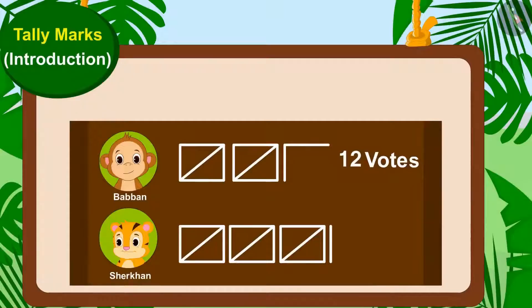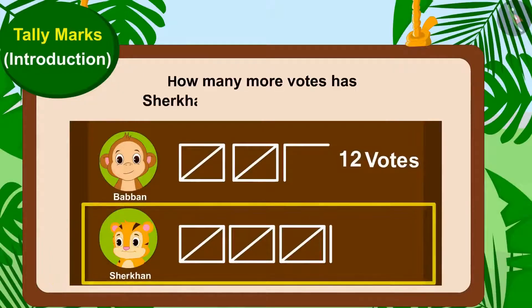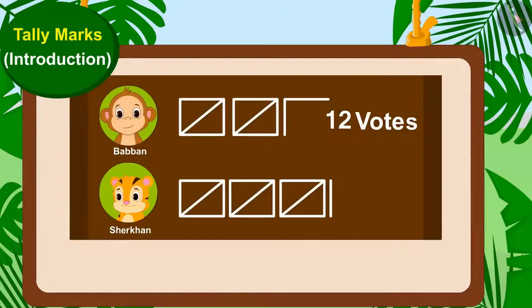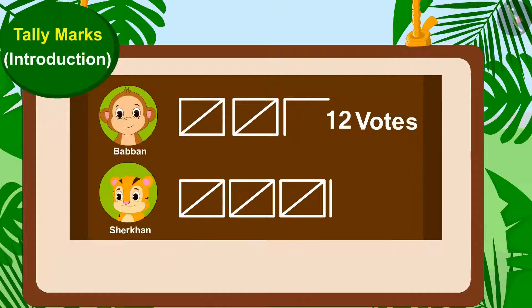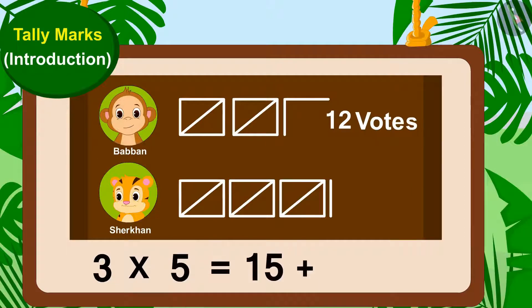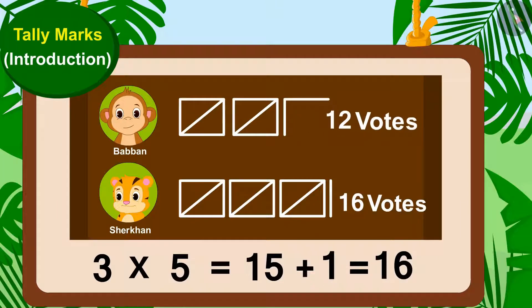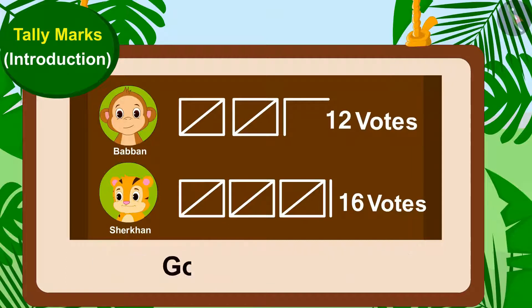Children, can you tell how many more votes Shere Khan has received than Babban? Shere Khan's votes consist of three groups of tally marks and one line. Shere Khan has got three times five, fifteen, plus one — sixteen votes. And Babban has got 12 votes. This means Shere Khan has got four votes more than Babban.